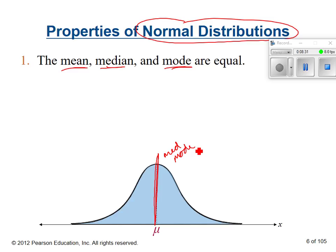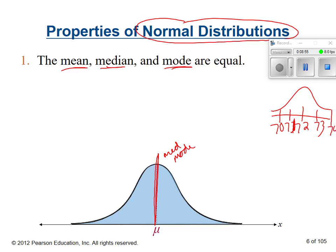So if they give you a normal curve and ask you to find the mean, median, and mode, should it be really difficult? If I gave you this normal curve right here - what's the mean? 72. What's the median? 72. What's the mode? 72. They're all the same if it's a normal distribution.